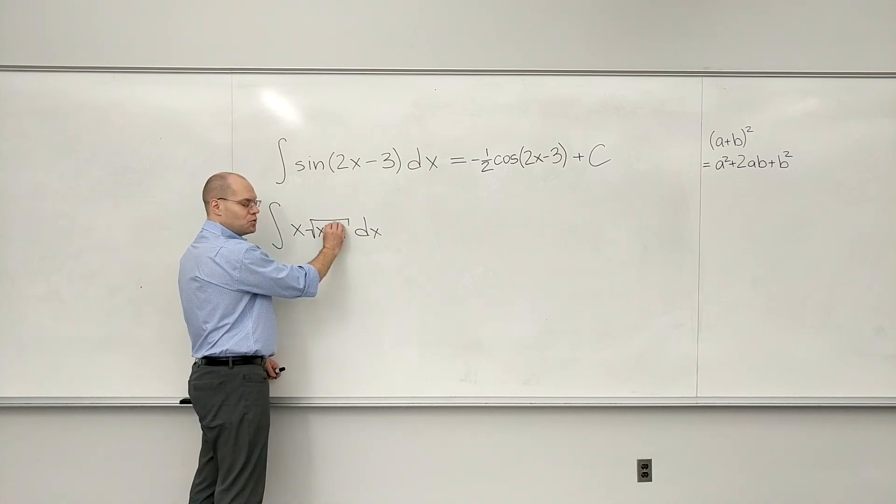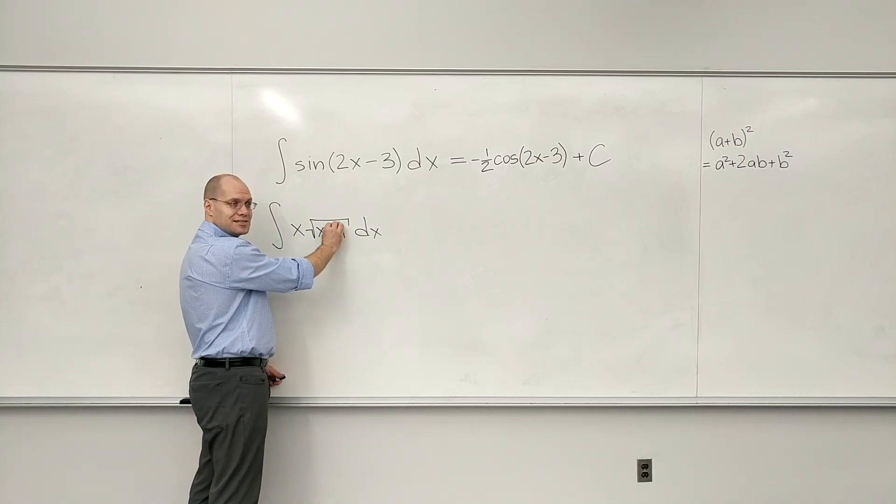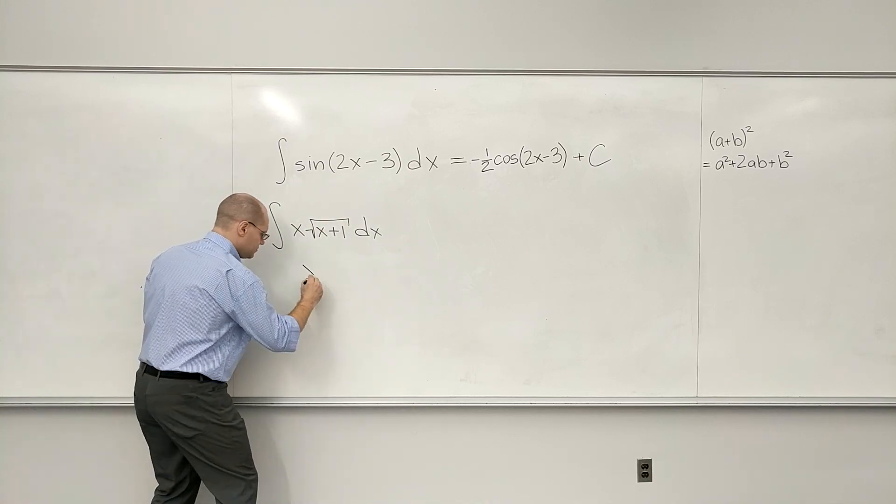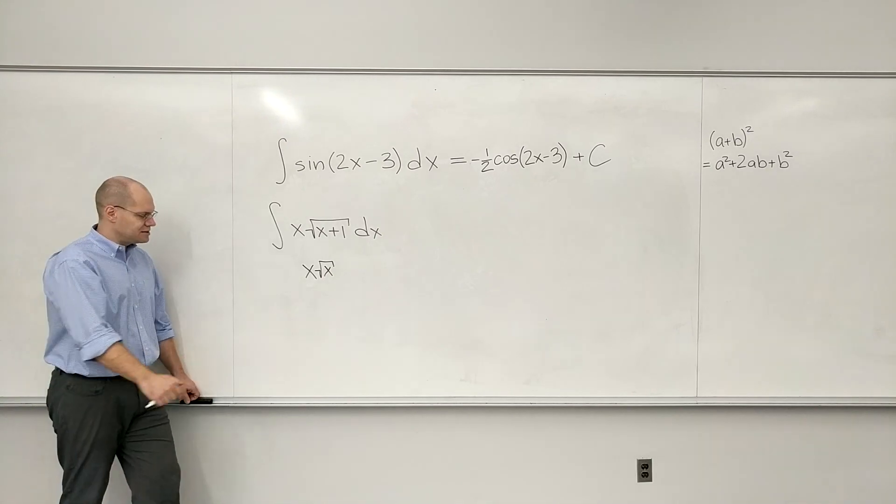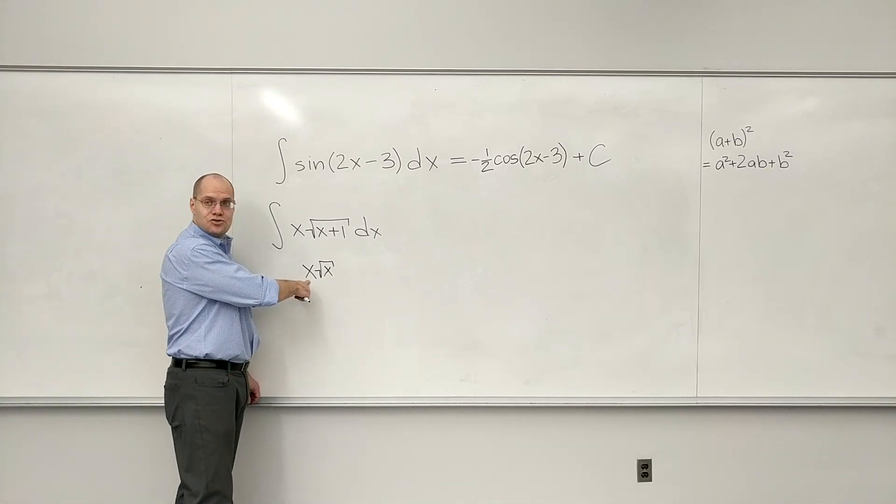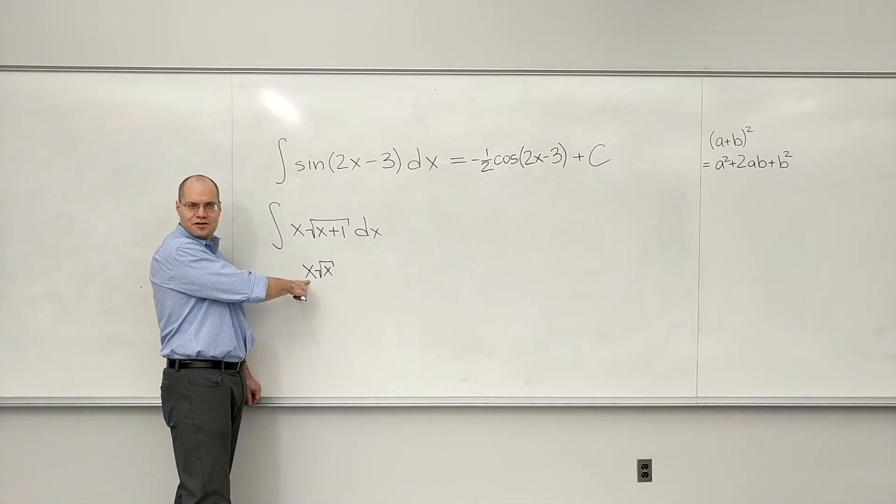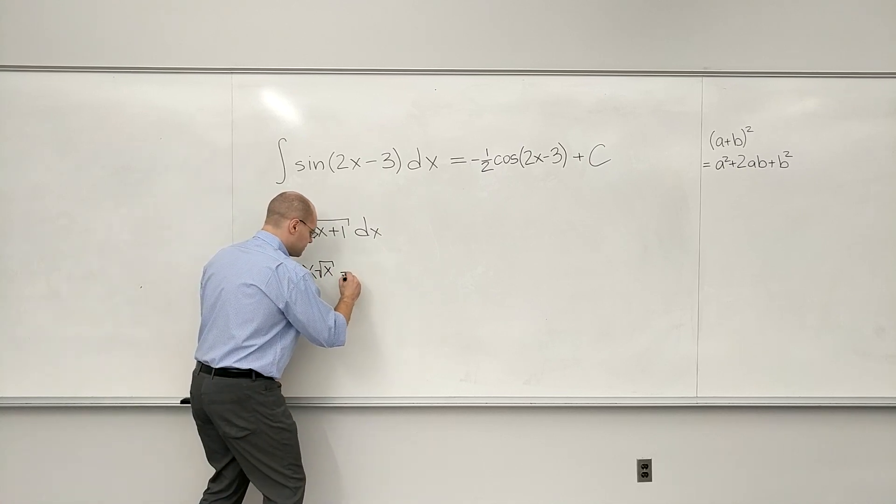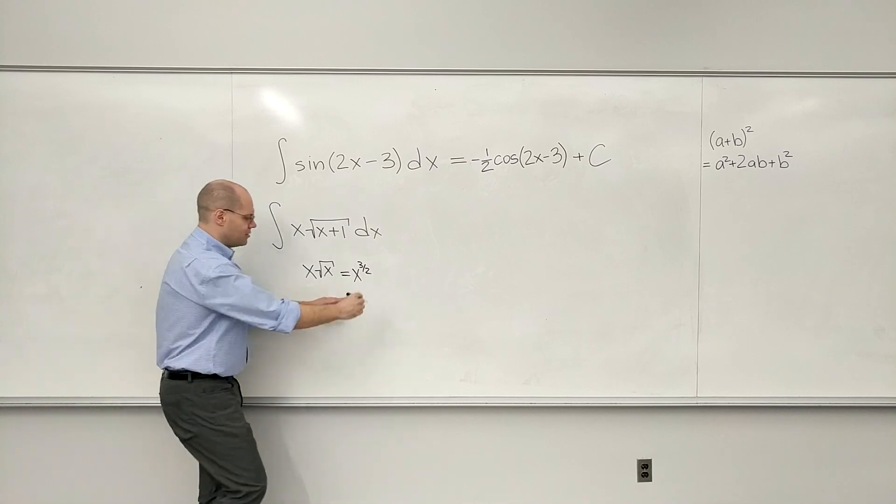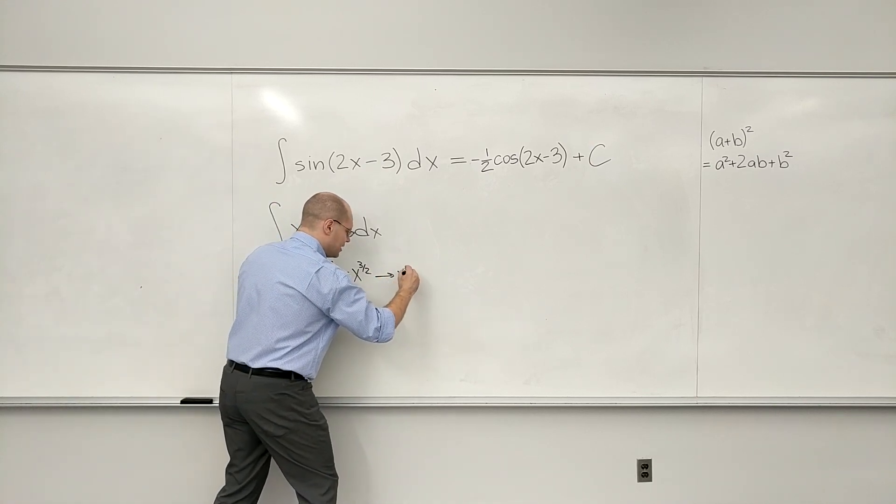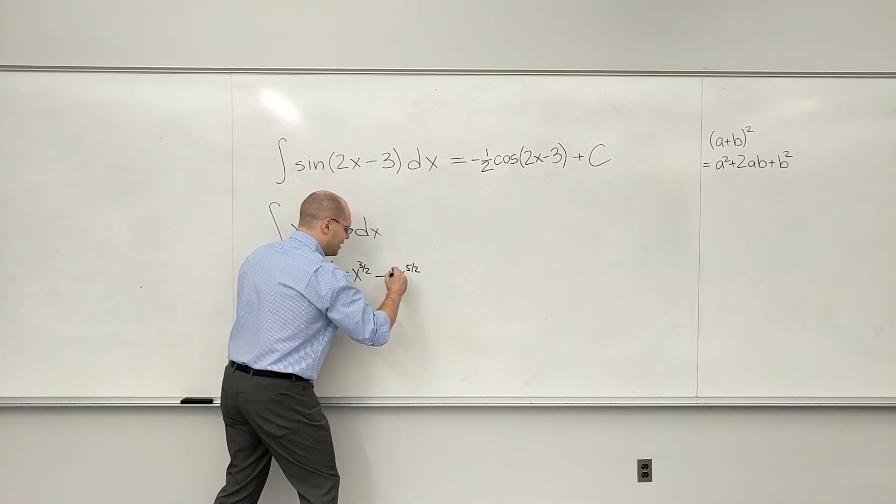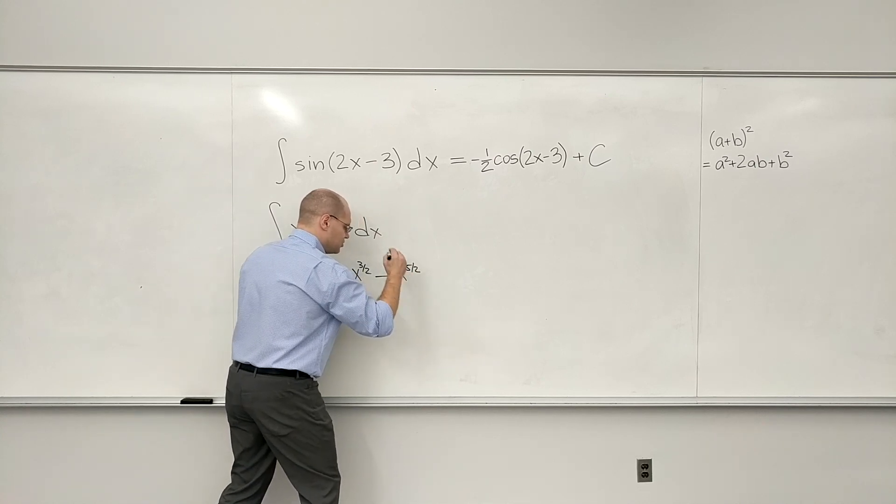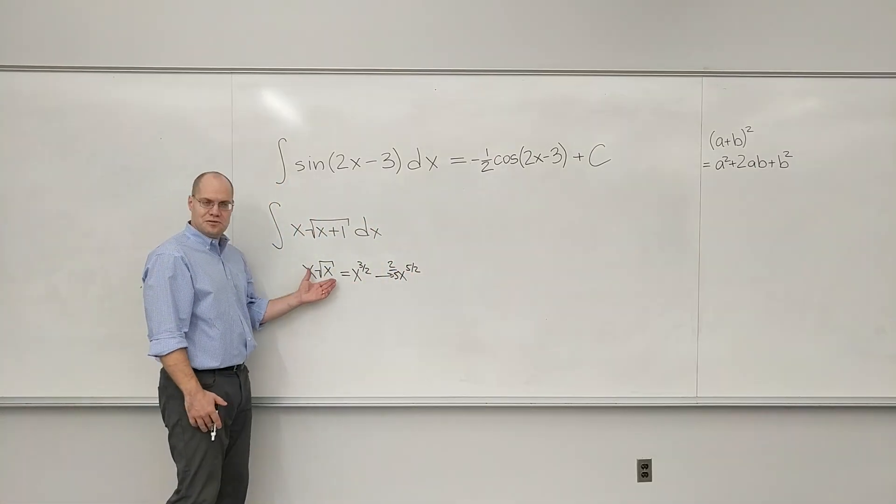Okay, what if this plus 1 wasn't here? What if it was just x times square root of x? Could you do that? Because this is just x to the 3 halves. That's all this is. It's x times x to the 1 half, so it's x to the 3 halves. And now it's pure power law. This will go to x to the 5 halves. And then you have to make up for it by putting in 2 fifths. So this would mess you up.